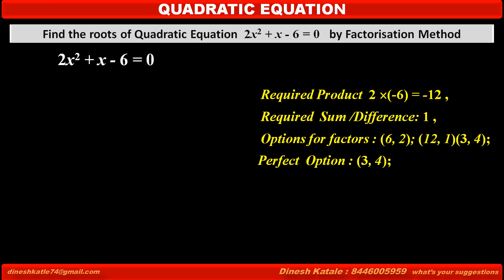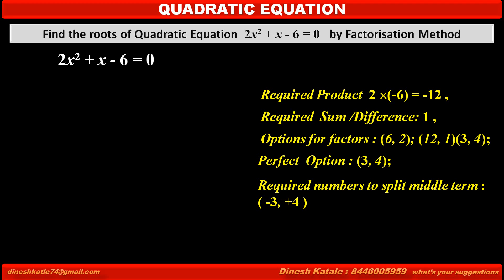Therefore, the perfect option is 3 and 4 — their product is 12 and their difference is 1. Since the middle term is positive, the bigger number should be positive and the smaller number should be negative, so that we get the middle term as positive. Therefore, the required numbers to split the middle term are -3 and +4, so that their difference is +1 (the coefficient of x) and their product is -12, which is the product of the first and last coefficients, 2 and -6.